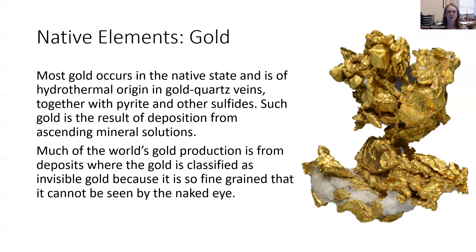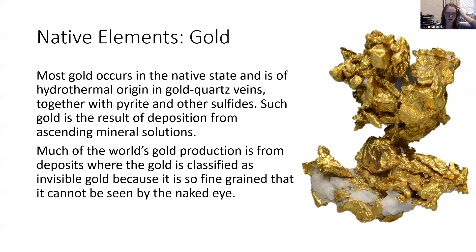Gold is actually a result of the deposition of ascending mineral solutions. At depth, you get those volcanic processes — really rich, hot ions in solution. Those fluids rise because of their low density, and as they rise they cool and come into contact with less pressure. Those ions then precipitate out of solution as the fluid rises up through the faults, through the cracks, through the pore spaces closer to Earth's surface.